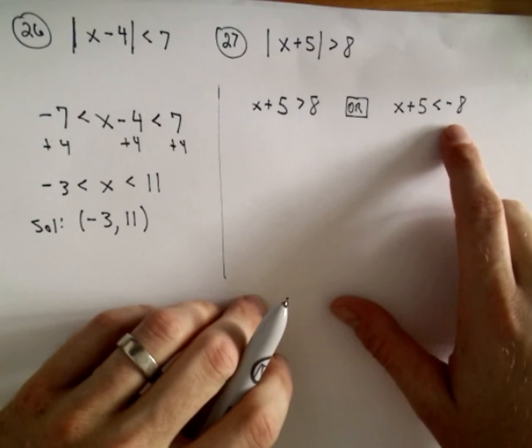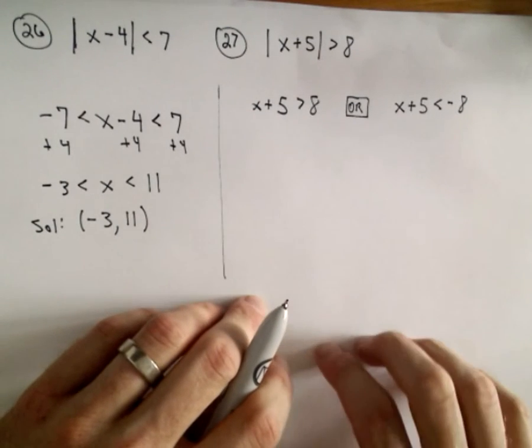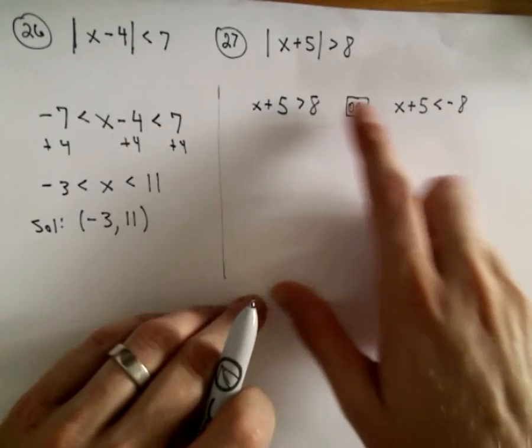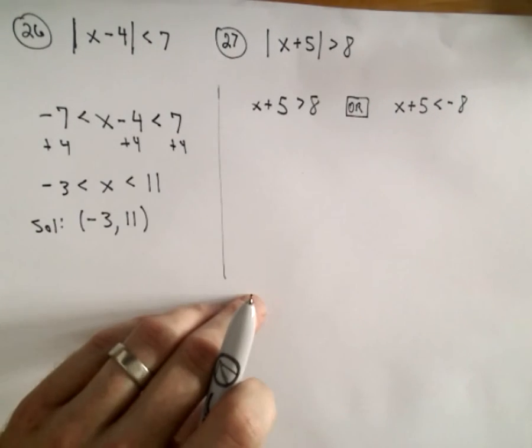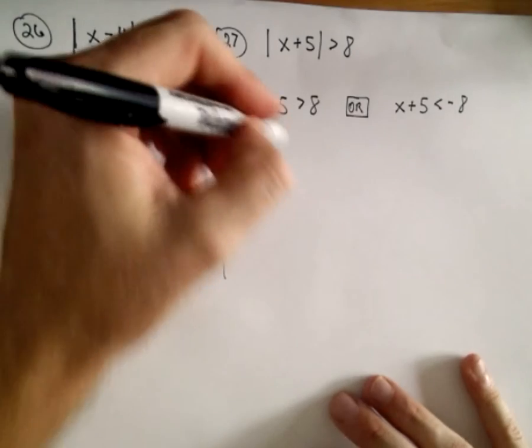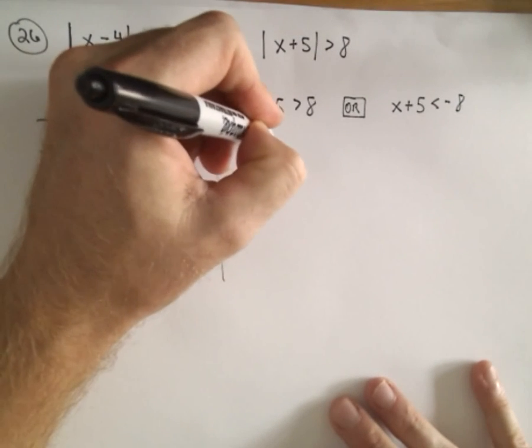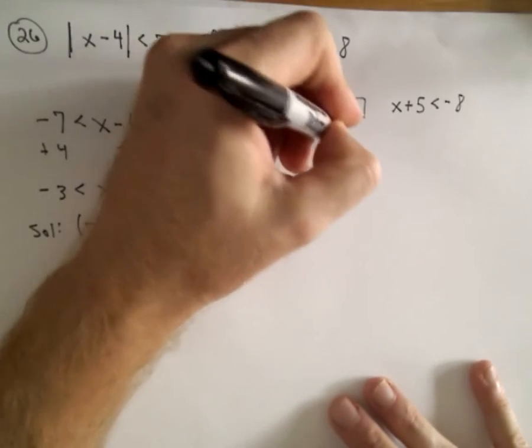Because if we make it less than negative 8, say negative 9, negative 10, etc., when we take the absolute value of that, we'll get a number, say positive 9, positive 10, etc., and that will be greater than 8. So for the first inequality, just subtract 5 from both sides.